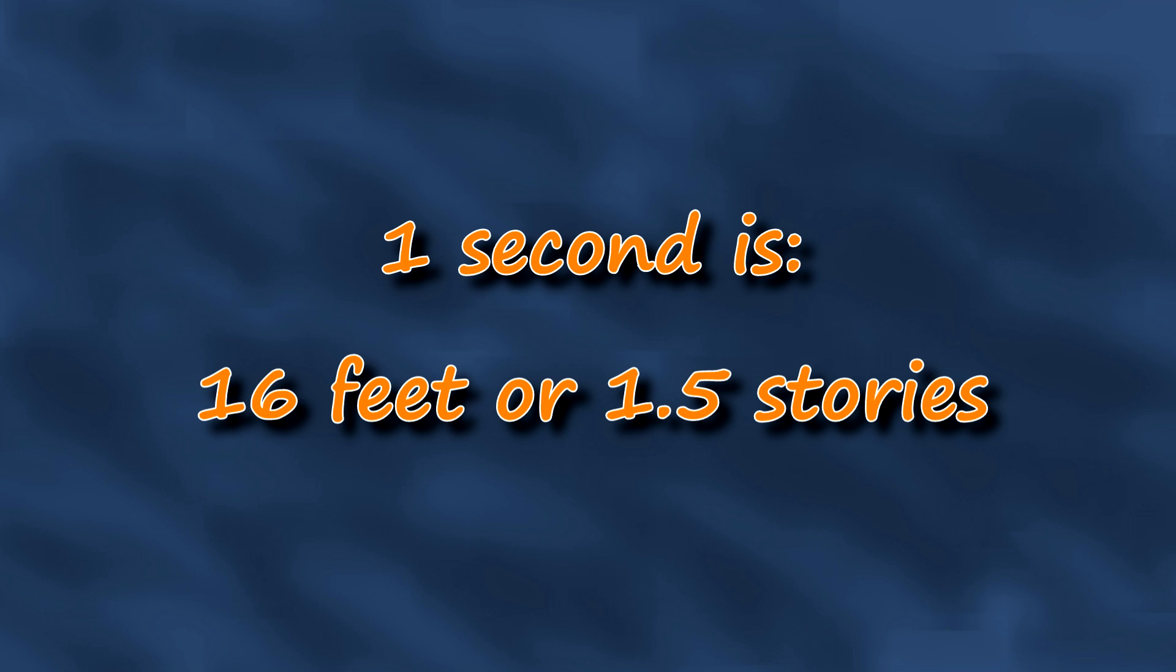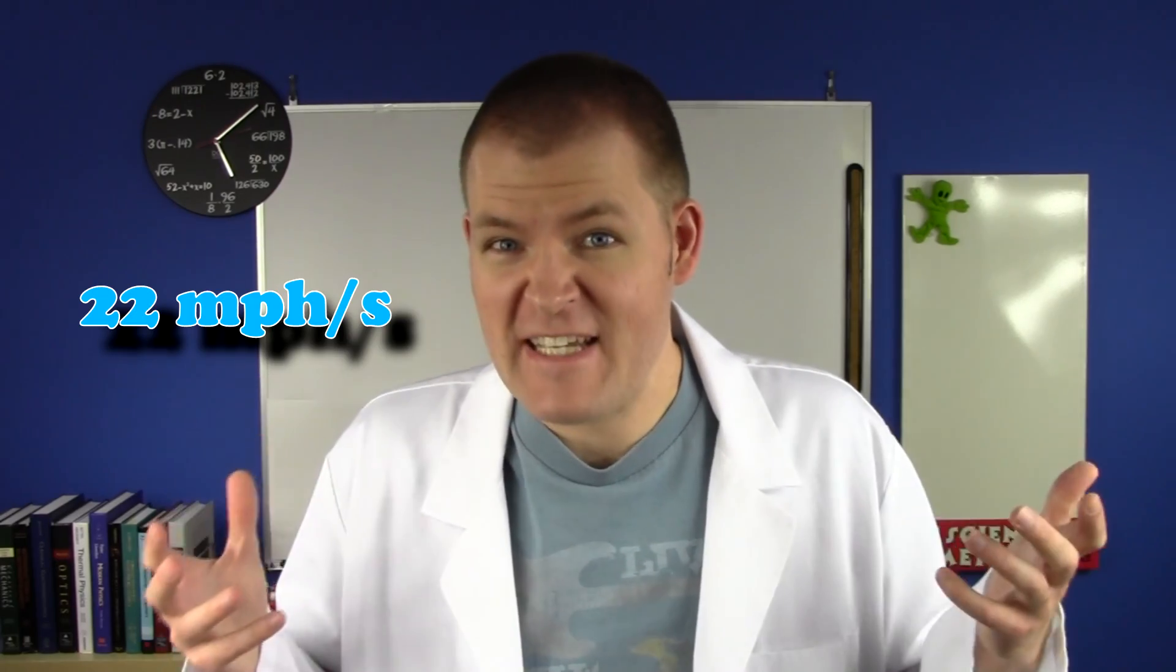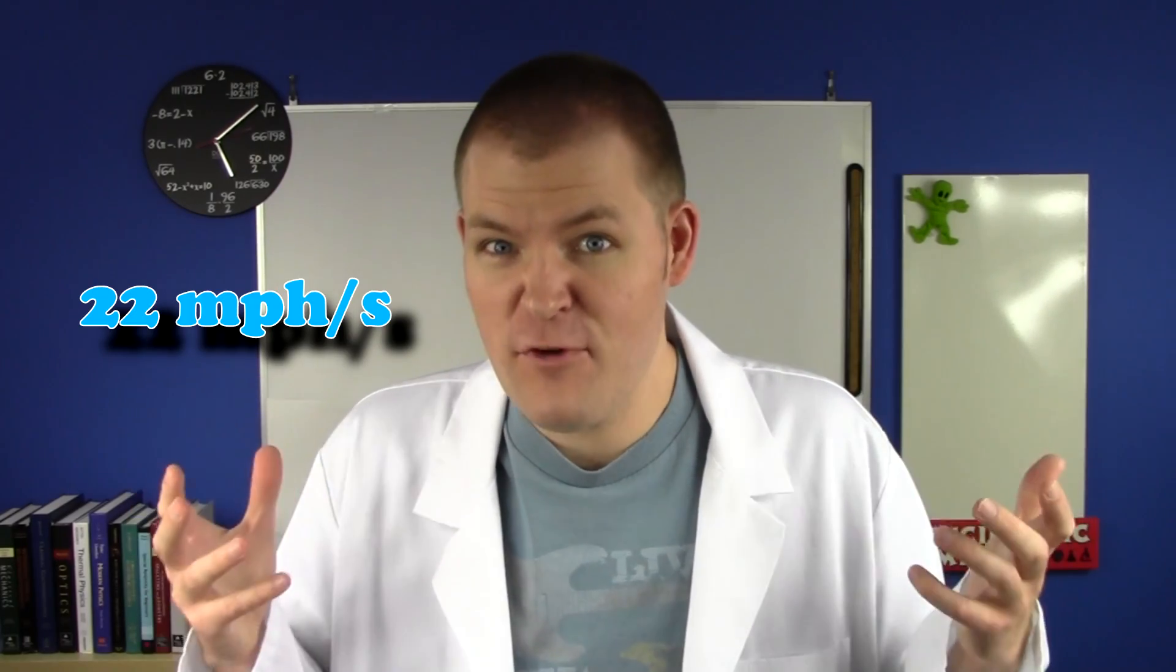For some perspective, in one second you fall about 16 feet, or one and a half stories. This is why people can die from a three-story fall. You're hitting the ground at 44 miles per hour! This 22 miles per hour per second is the same for everything everywhere on the earth.